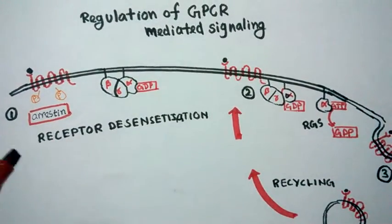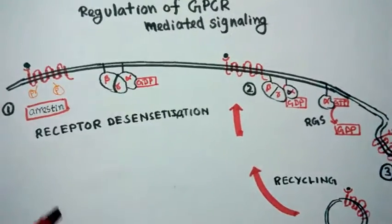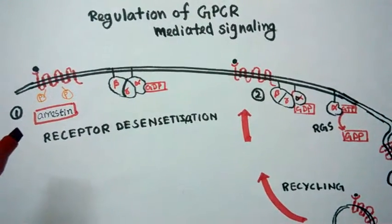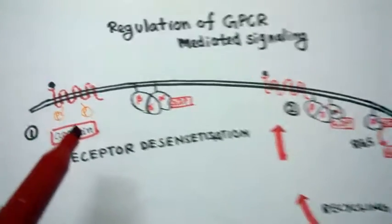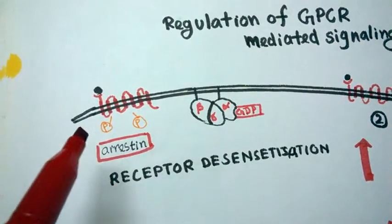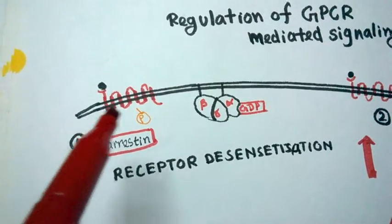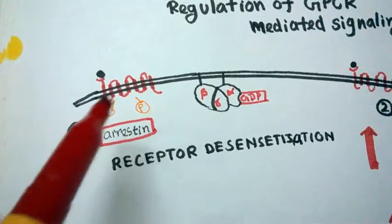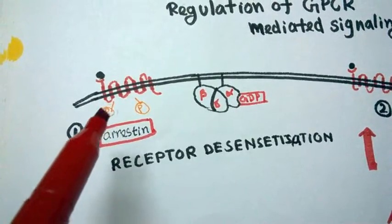However, there are three mechanisms for switching off this total signaling cascade. One mechanism is there are certain kinases that phosphorylate these membrane associated G protein coupled receptors. This GPCR gets phosphorylated by specific kinases as you can see, and this phosphorylated GPCR is actually a docking site for arrestin.